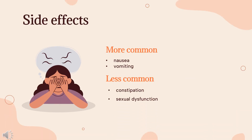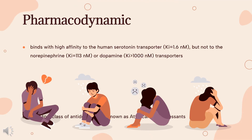Mechanism of Action: Vortioxetine is classified as a serotonin modulator and stimulator (SMS), as it has a multimodal mechanism of action towards the serotonin neurotransmitter system, whereby it simultaneously modulates one or more serotonin receptors and inhibits the reuptake of serotonin. More specifically, vortioxetine acts via the following biological mechanisms: as a serotonin reuptake inhibitor (SRI) through inhibition of the serotonin transporter, while also acting as a partial agonist of the 5-HT1B receptor, an agonist of 5-HT1A, and antagonist of the 5-HT3, 5-HT1D, and 5-HT7 receptors.